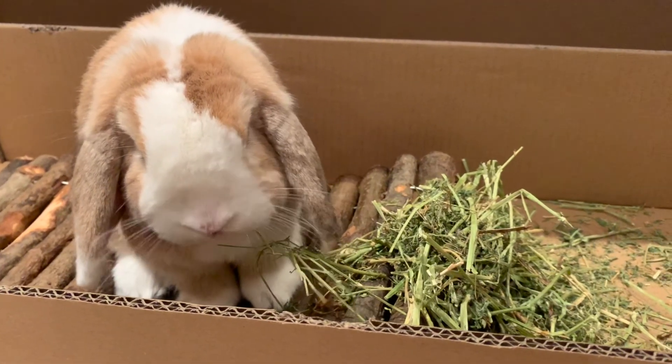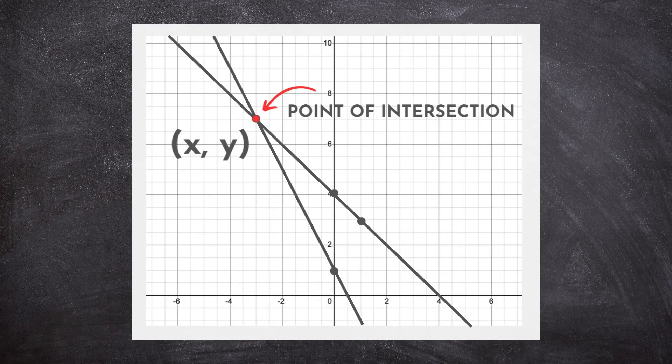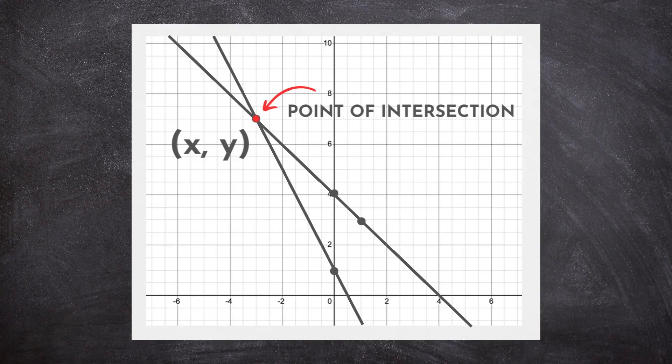Yeah, but a point has both an x and a y. That's a good point. Remember when you're solving a linear system, you are finding the point of intersection. And points need both an x coordinate and a y coordinate.